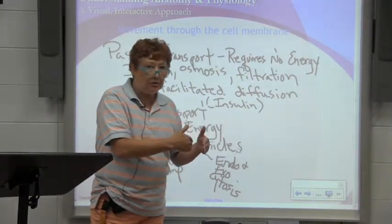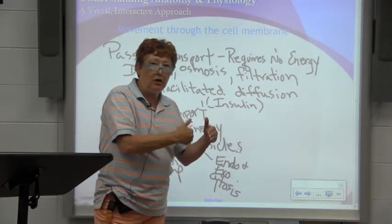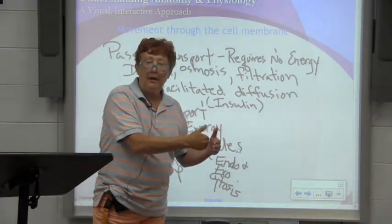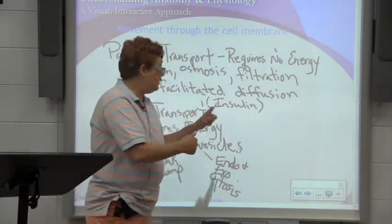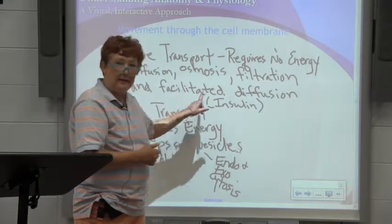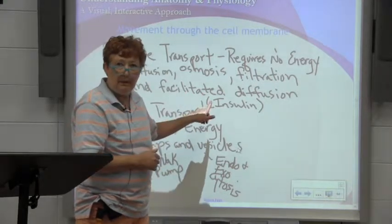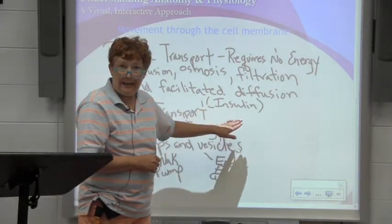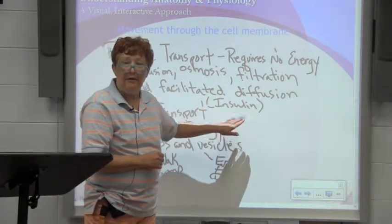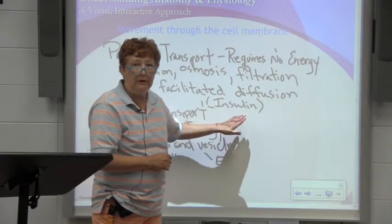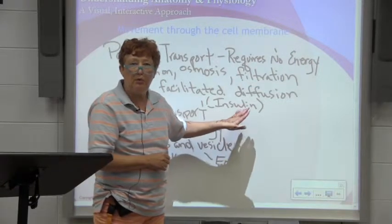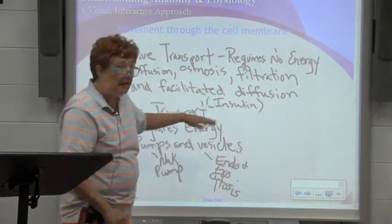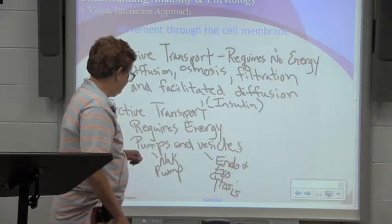Sugar alone can't get in — it must have something to facilitate or help it get through. In the case of sugar, that's insulin. The role of insulin is to transport sugar into the cells, so we call that facilitated diffusion.